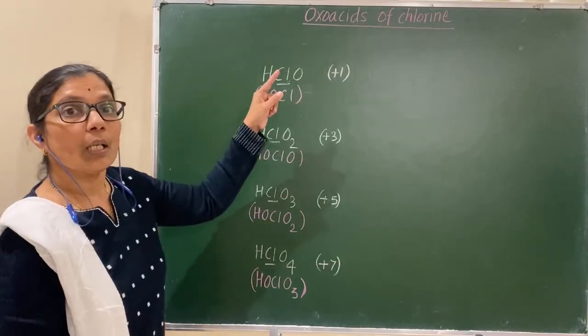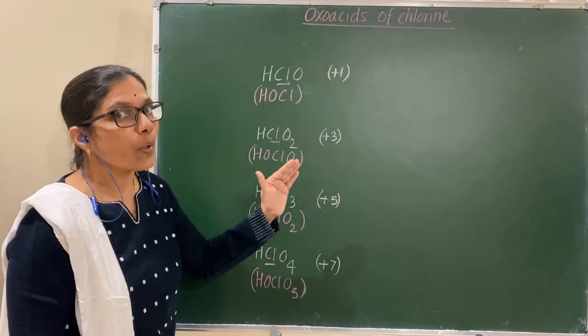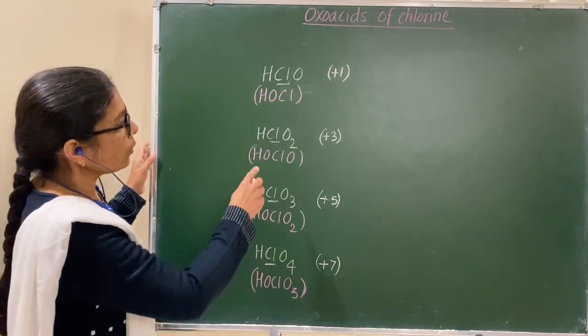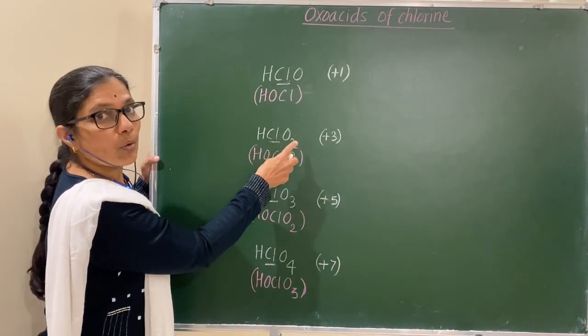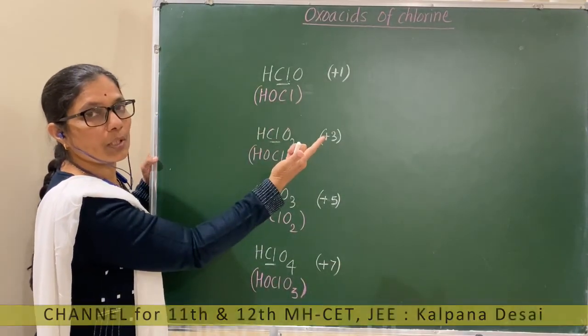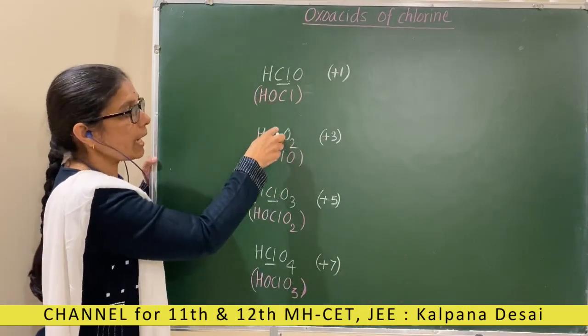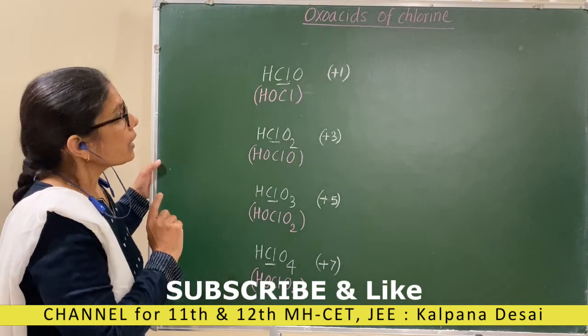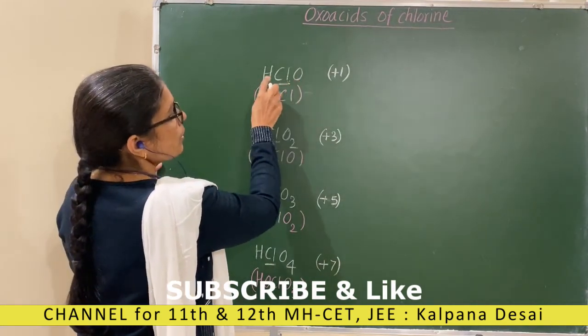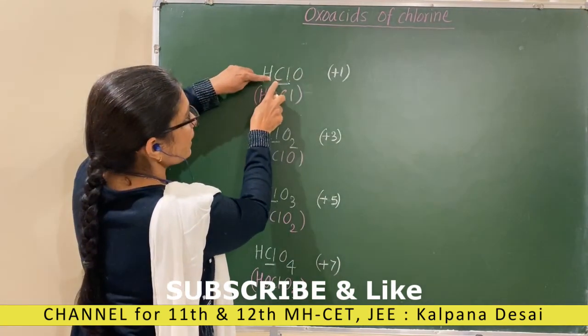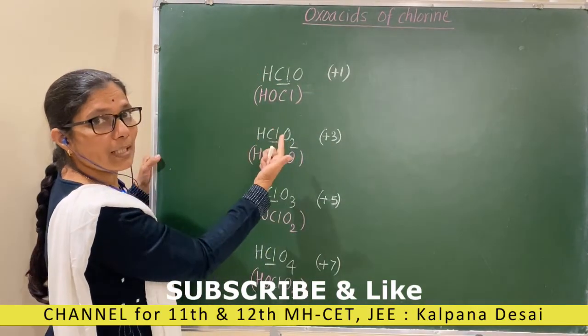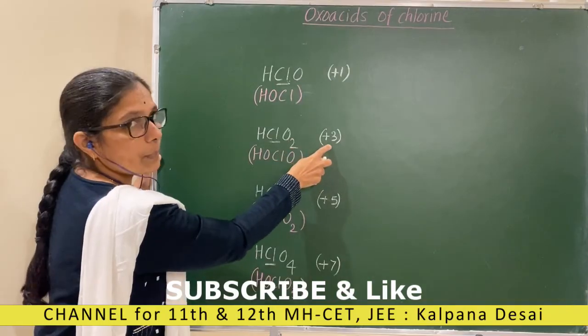Now, first find out the oxidation number of chlorine. Here in this compound, chlorine combines with oxygen which is more electronegative. Therefore, chlorine has positive oxidation numbers. See here, this is minus 2 plus 1, therefore minus 1, balanced by plus 1. Here minus 4 plus 1, minus 3, therefore balanced by plus 3.